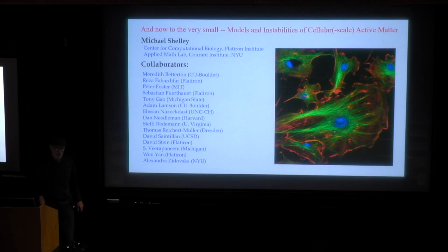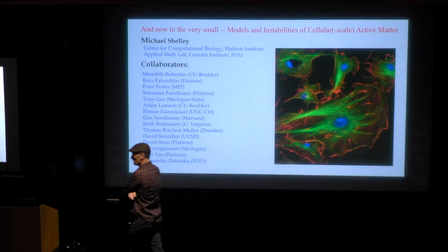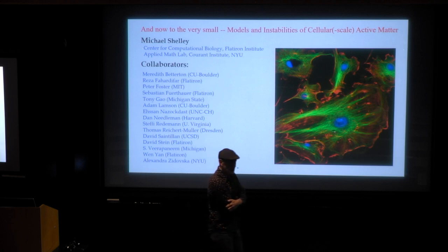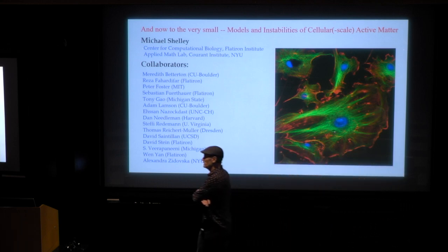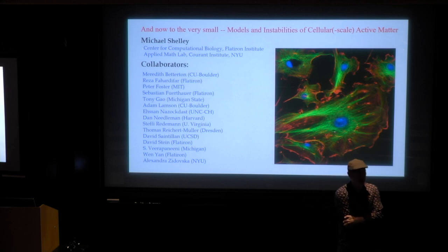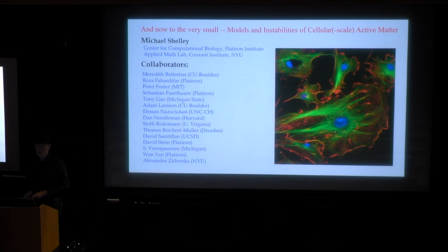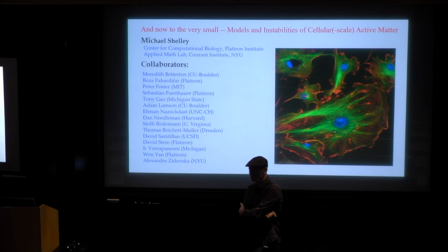Christina was going to give the introductory talk to set the ground for some of the talks later today. Since she cancelled, I'm going to take her place and do my own version of that. I'm going to talk about background on what we call active matter problems, particular problems that arise in active matter made up of biological components, how we model it, some of the instabilities we've uncovered, and then give a general phenomenology — which is why people talk about things like bacterial turbulence or active turbulence.